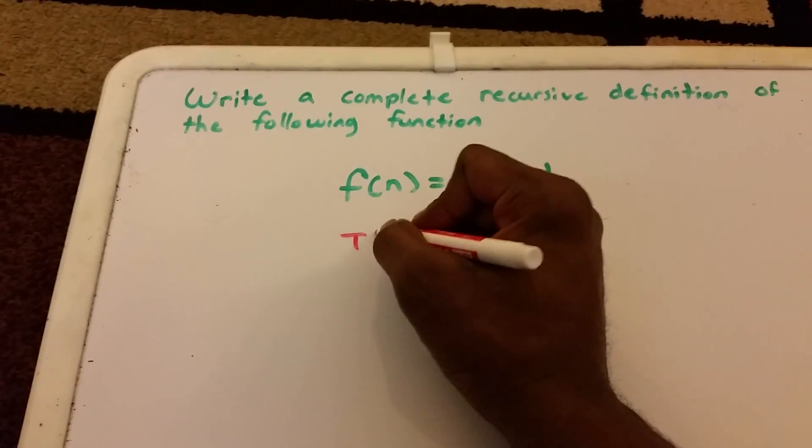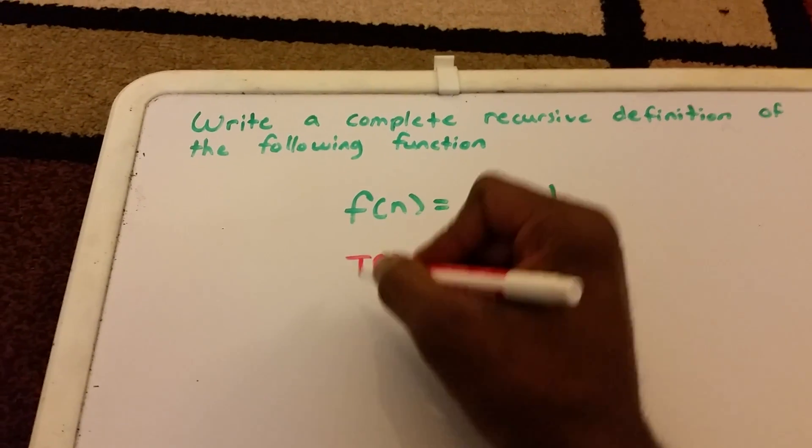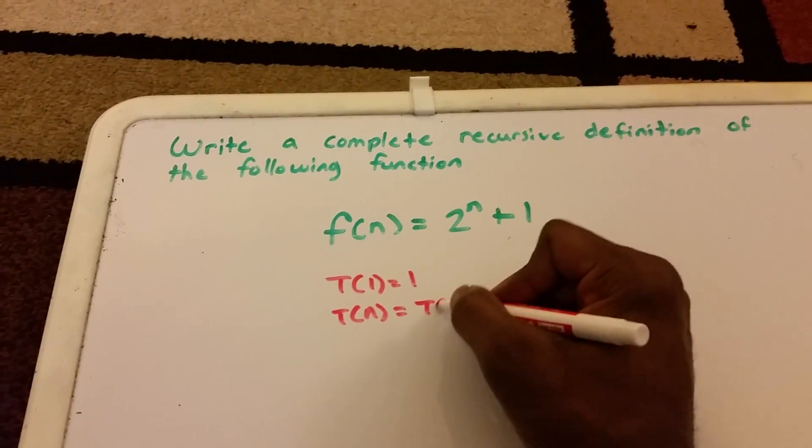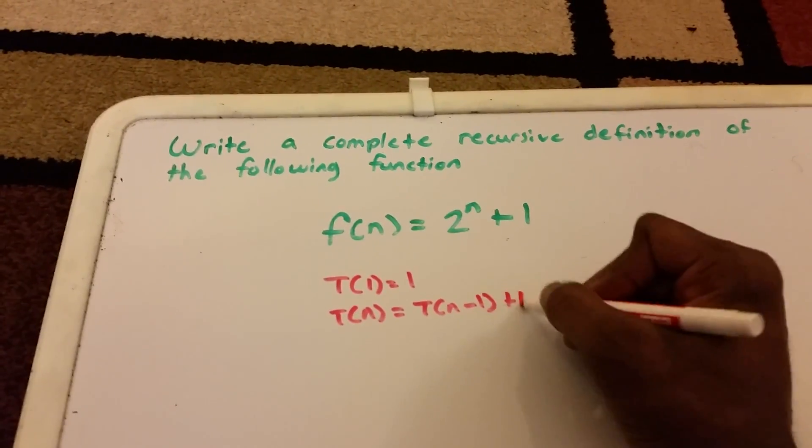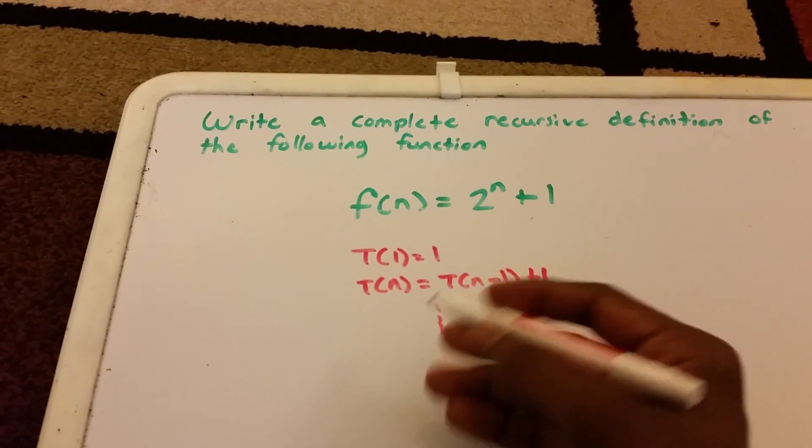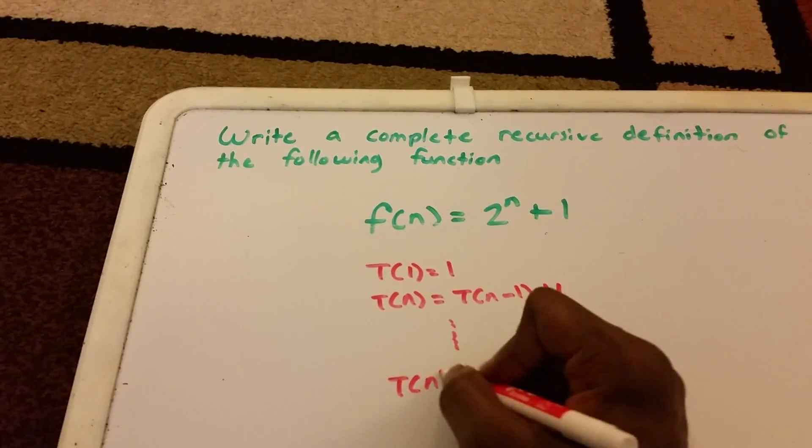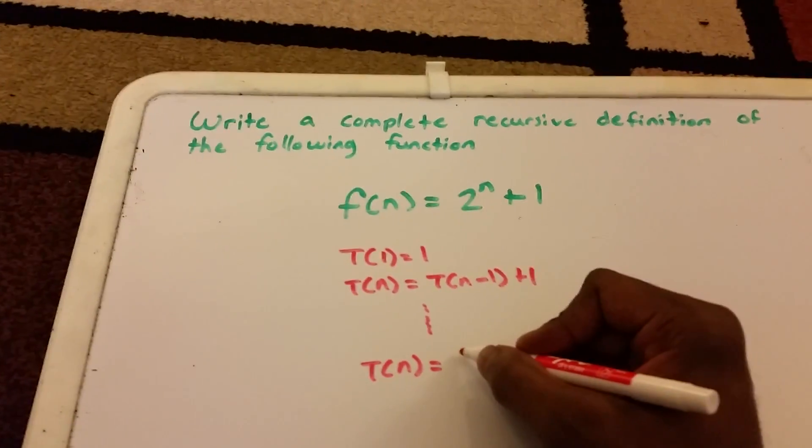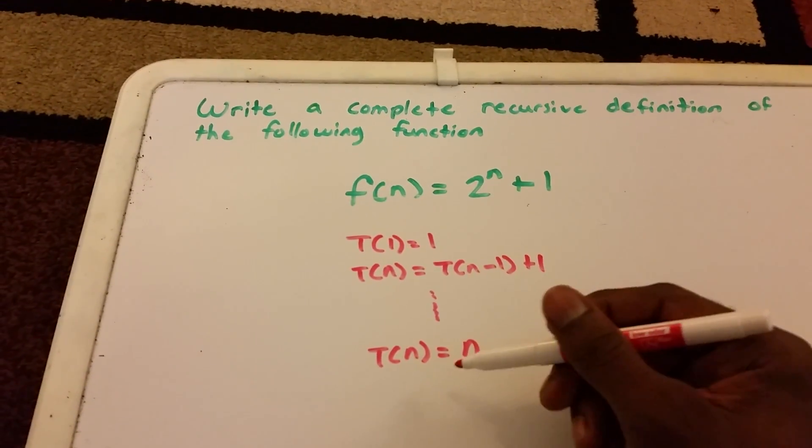Now this is a little different from my other videos where we start off with usually a recurrence relation, something like T(1) = 1 and T(n) = T(n-1) + 1. We do a bunch of steps here, use a method to figure this out, and we get T(n) equals some function like n.